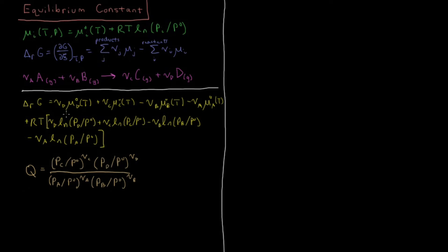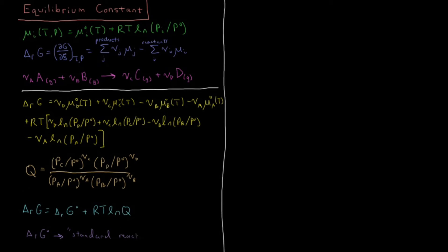We can now define the standard Gibbs energy of reaction ΔᵣG⁰ as containing all the standard chemical potential terms. This gives us the compact and important relation: ΔᵣG = ΔᵣG⁰ + RT·ln(Q), where ΔᵣG⁰ is the standard reaction Gibbs energy corresponding to those four standard chemical potential terms, and RT·ln(Q) corresponds to the pressure-dependent logarithmic terms.